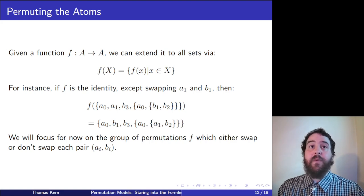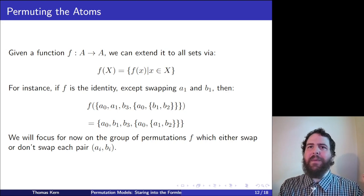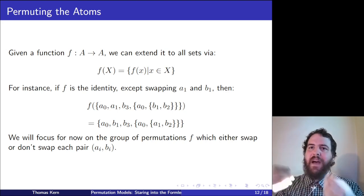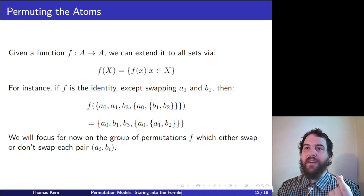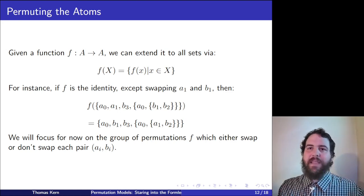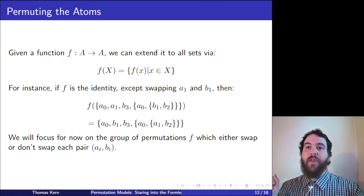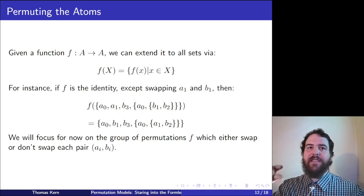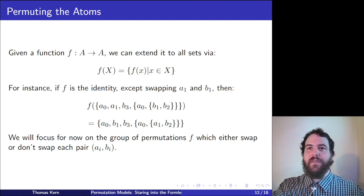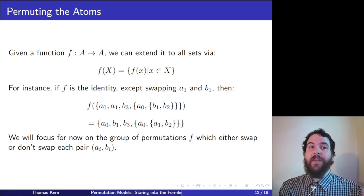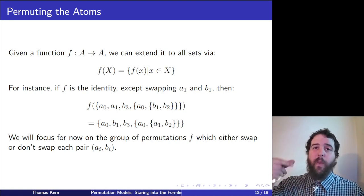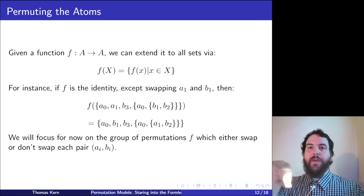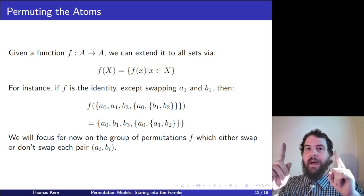Let's formalize this. If we have a permutation on the atoms, we can extend it to all sets by identifying all atom occurrences and applying the permutation. For instance, a function that just swaps A1 and B1 and leaves everything else the same: applying it to a set just swaps instances of A1 and B1 throughout. We'll focus on permutations that either swap or don't swap each pair, and nothing else — no moving atoms between pairs.